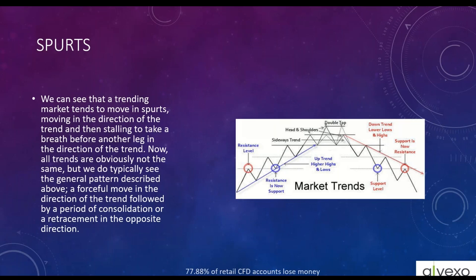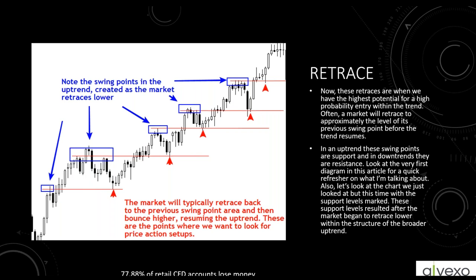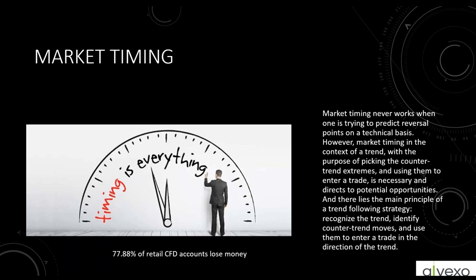You need to learn the different identities of the different parts of the trend. A trending market moves in spurts — moving in the direction of the trend, then stalling to take a breather before another leg. When the trend starts breaking — losing those higher highs and higher lows, momentum easing, speed easing, volume contracting — it's telling you that trend is in danger. Market timing doesn't work when predicting reversal points, but using counter-trend extremes to enter a trade in the direction of the trend is the main principle of trend following.